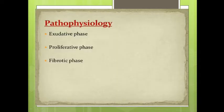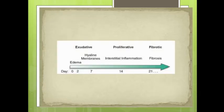There are three phases in ARDS pathophysiology: the exudative phase, the proliferative phase, and the fibrotic phase. The exudative phase runs from 0 to 7 days. The proliferative phase ensues after 7 days and runs up to 20–21 days. The fibrotic phase takes place after 3 weeks.